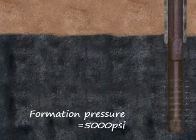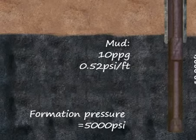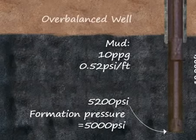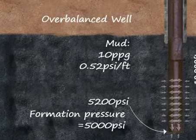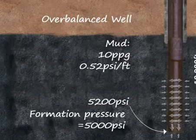A drill bit can be seen here cutting rock, with the drilling fluid transporting the cuttings back to the surface. In well control, the hydrostatic pressure created by the drilling fluid column must exceed the pressure exerted by formation fluids. Consider a situation where the formation pressure is 5,000 psi. If the well is 10,000 feet deep, filled with mud weighing 10 pounds per gallon, or 0.52 psi per foot, having multiplied 10 by 0.052, the bottom hole pressure would be 5,200 psi. This creates an overbalanced condition, as there is an overbalance of 200 psi, which would be enough pressure to overcome the formation pressure of 5,000 psi and keep the formation fluid from entering the well.